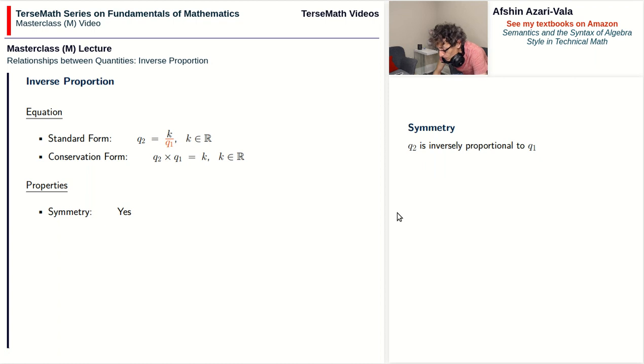And we can actually show this. Suppose q2 is inversely proportional to q1. That means q2 equals k divided by q1. Now rearrange the equation for q1, and that shows that q1 is inversely proportional to q2.